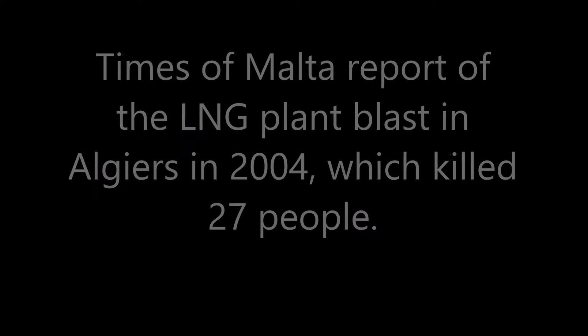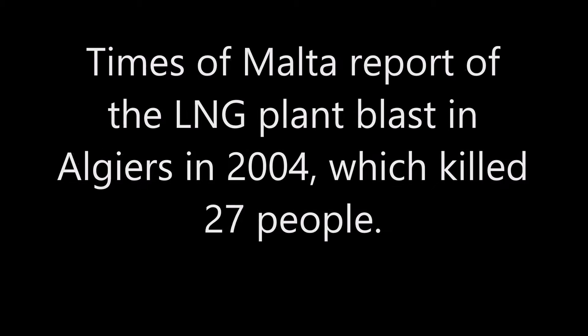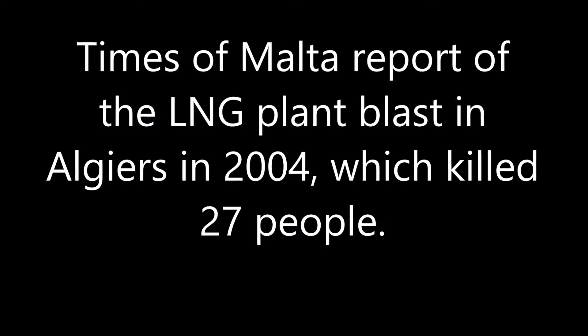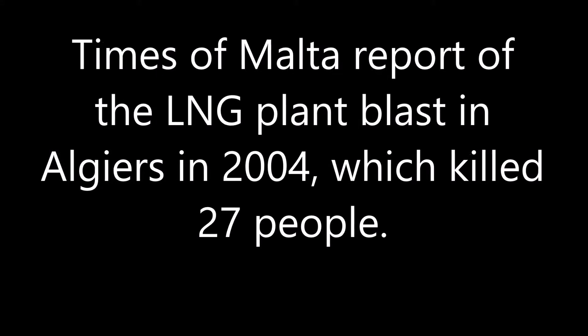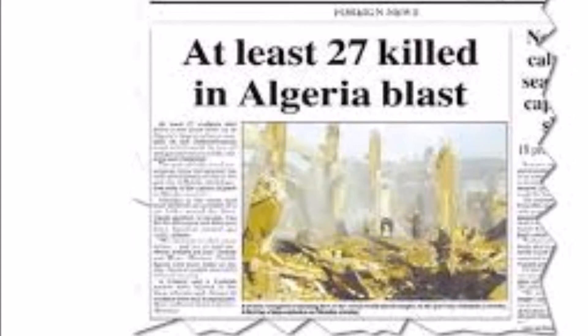In 2004, 27 people died and 74 were injured in an explosion at an LNG plant in Skikda, 500 km east of the Algerian capital. A report noted that the explosion was the consequence of a catastrophic failure in one of the cold boxes of Unit 40, which led to a vapor cloud explosion of either LNG or refrigerant.